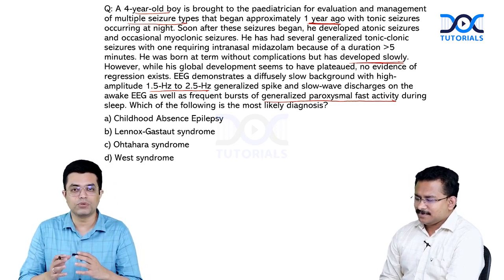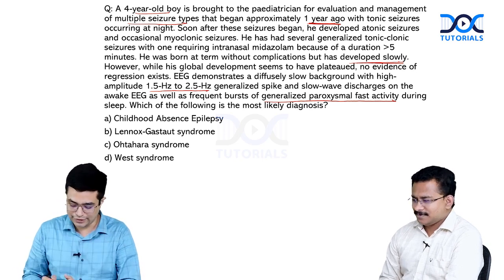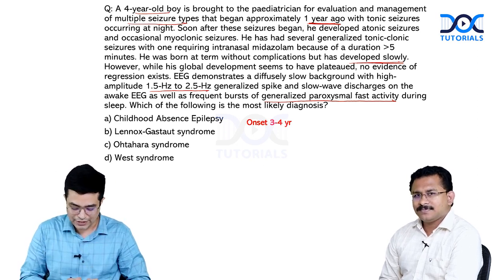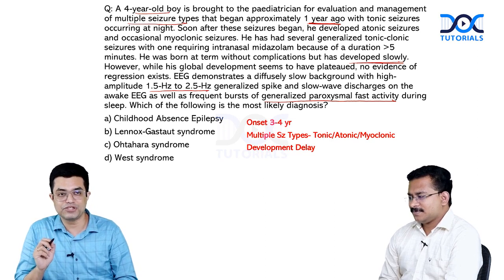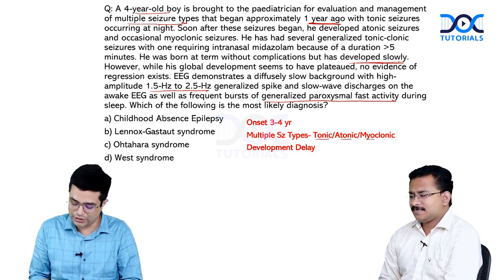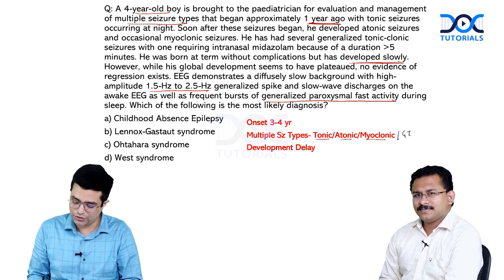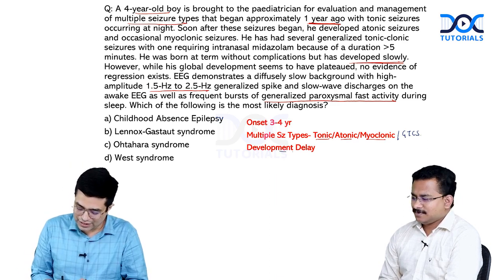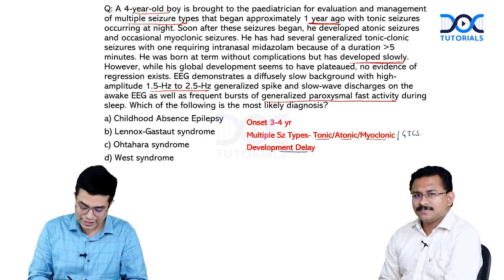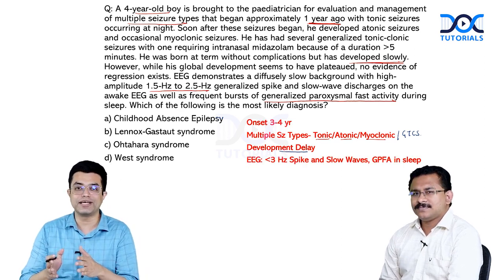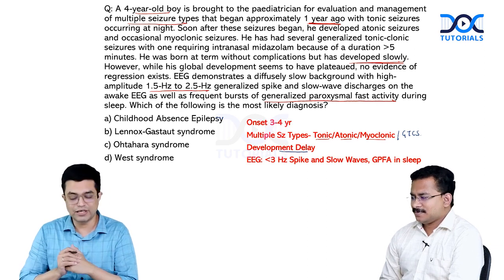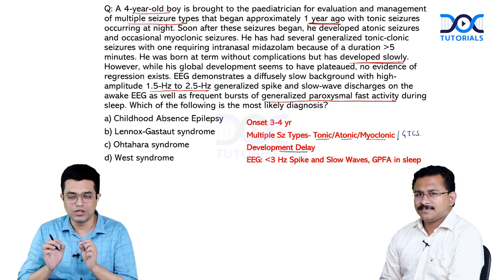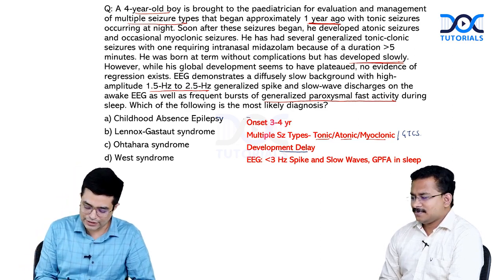These questions look difficult but you only have to focus on the keywords. First keyword: onset of seizures is happening at three to four years of age. Second: multiple seizure types are present — tonic, atonic, myoclonic, and generalized tonic-clonic requiring intranasal midazolam. There is also developmental delay, although no neurological regression. EEG shows spike and slow wave pattern in the awake state which is less than 3 hertz, and generalized paroxysmal fast wave activity during sleep. All of this merges into a diagnosis of Lennox-Gastaut syndrome.